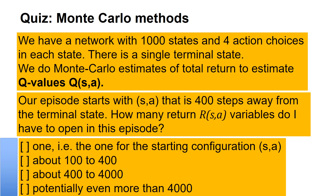Let's finish with the quiz. Let's try to implement these Monte Carlo methods. We assume that we have a network with a thousand states and four action choices in each state. There's a single terminal state to make things easy. Now we want to do Monte Carlo estimates of the total return to estimate the true values.